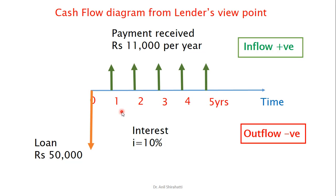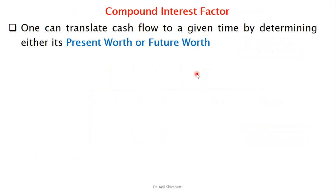From the lender's point of view — the person who is giving the money, in this case the bank — at the 0th year, the 50,000 is going out of the bank, so the loan of 50,000 is shown towards the outflow side, that is the negative side. And every year the bank is receiving a constant amount of 11,000, that's why it is on the inflow side. This is a situation like our EMIs — we are taking a loan and paying some constant amount. There may also be a different cash flow diagram where instead of constant amounts, it may vary.